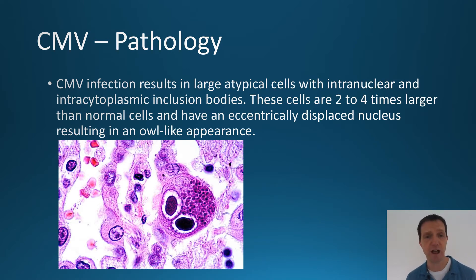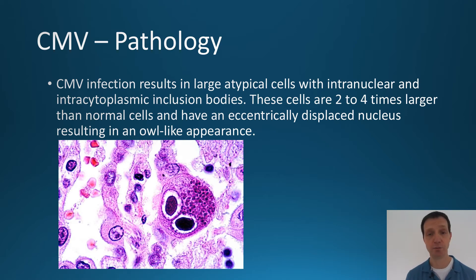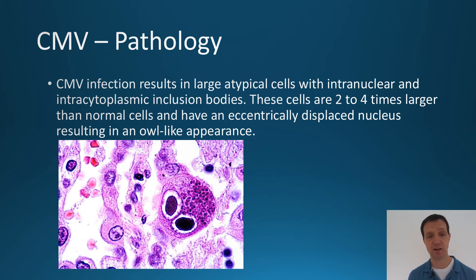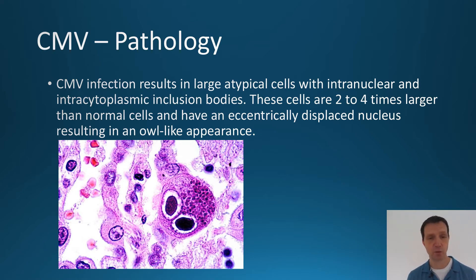In terms of the actual pathology, CMV infection results in a large number of cells with intranuclear and intracytoplasmic inclusion bodies. What that means is the cells increase to two to four times their normal size and have a displaced nucleus, so they look like an owl eye. You can see the characteristic cell in the picture — it looks like two owl eyes — and the speckled pattern above those eyes represents the intracytoplasmic inclusion bodies.